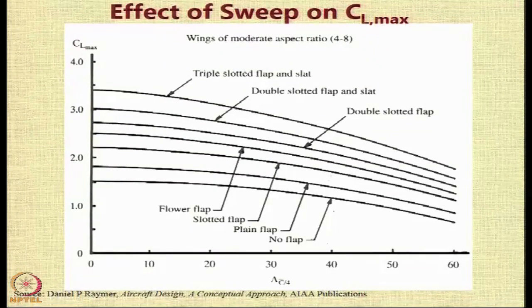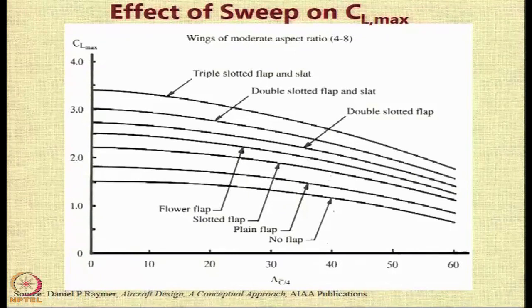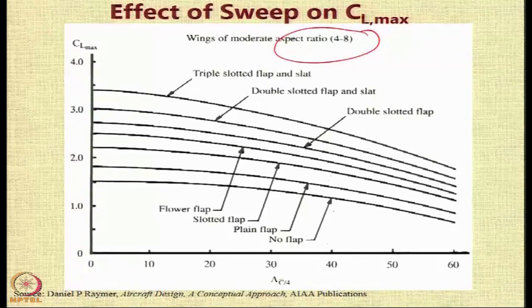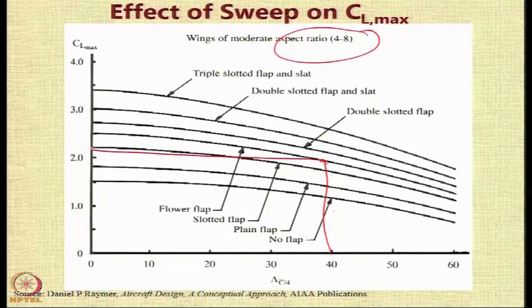This graph from Riemar's textbook shows two things: different flap types have higher values of CL max, and it also shows how these values reduce with an increase in the quarter chord sweep. You can use this graph for wings of moderate aspect ratio only. For example, if the sweep is 40 degrees and the flap type is Fowler, you can read the value of CL max directly from the graph.